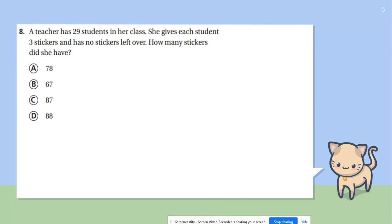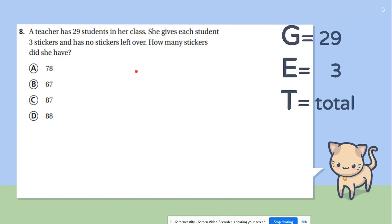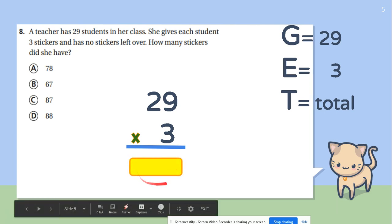Number 8. A teacher has 29 students in her class. She gives each student 3 stickers and has no stickers left over. How many stickers does she have? So let's do the GET. 29 students and each student gets three stickers. What was the total amount of stickers that she had at the beginning before she passes them out? We're going to multiply 29 times 3. And we're looking for the product.